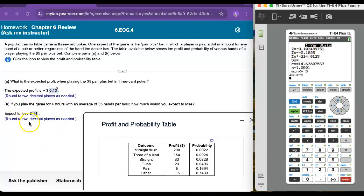In the second part of this, if you play the game for four hours with an average of 35 hands per hour, how much would you expect to lose? We're talking about playing four hours, 35 hands an hour, and we expect to lose $0.10 on every hand. So times negative $0.10. When we do that arithmetic, our answer is $14. That's how much we expect to lose.